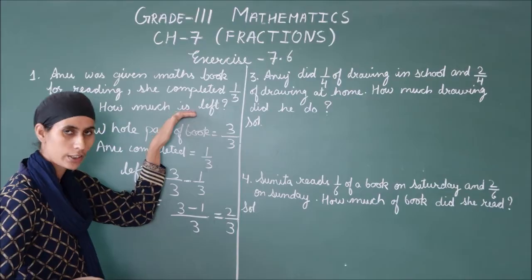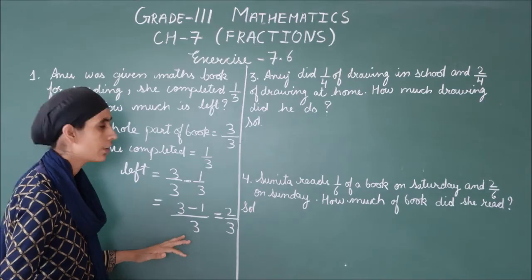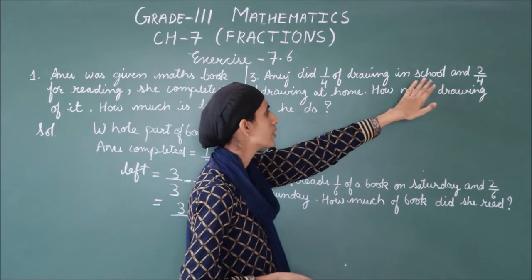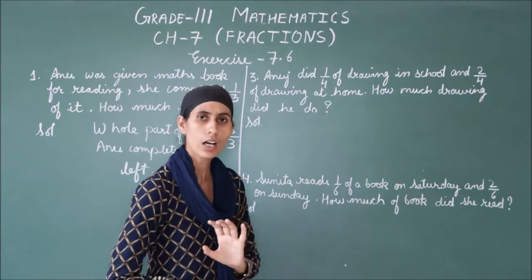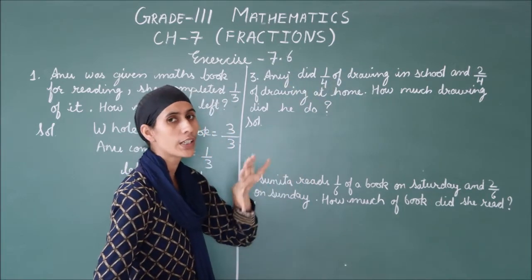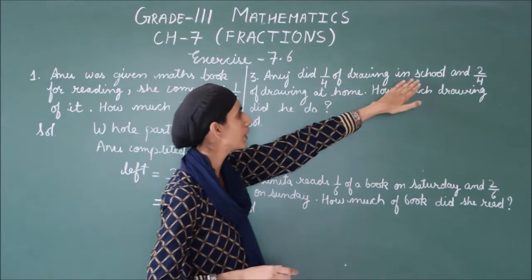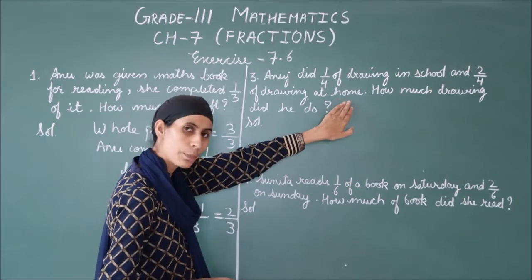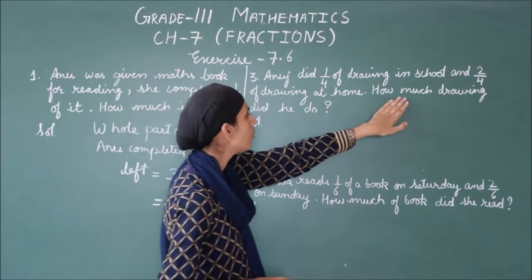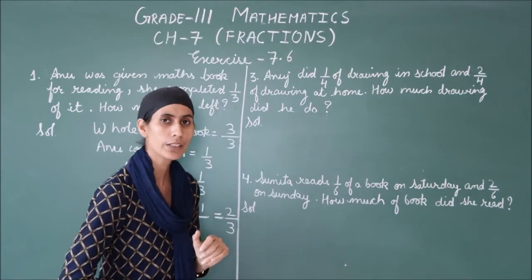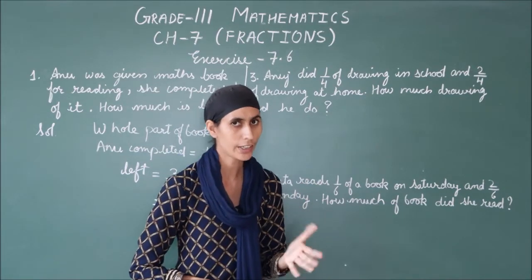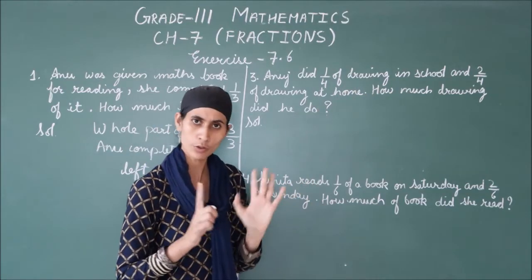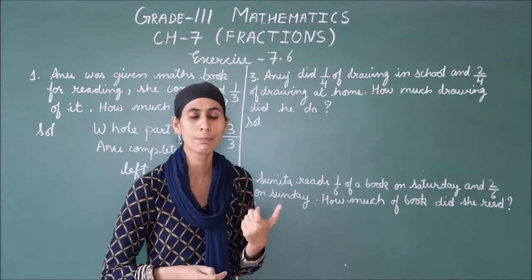So I hope you understand question 1. Now let's move to question number 3. Anuj did 1 by 4 of a drawing in school and 2 by 4 of the same drawing at home. Anuj completed 1 by 4 in school and 2 by 4 at home. How much drawing did he do in total? We need to find how much drawing he has completed altogether.